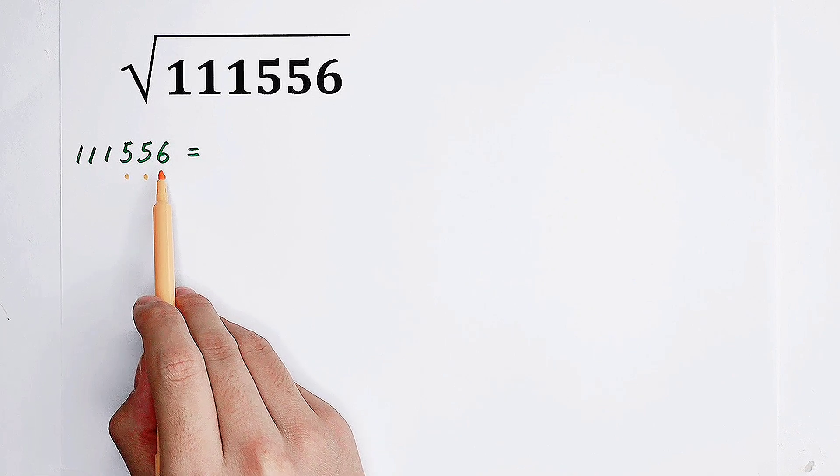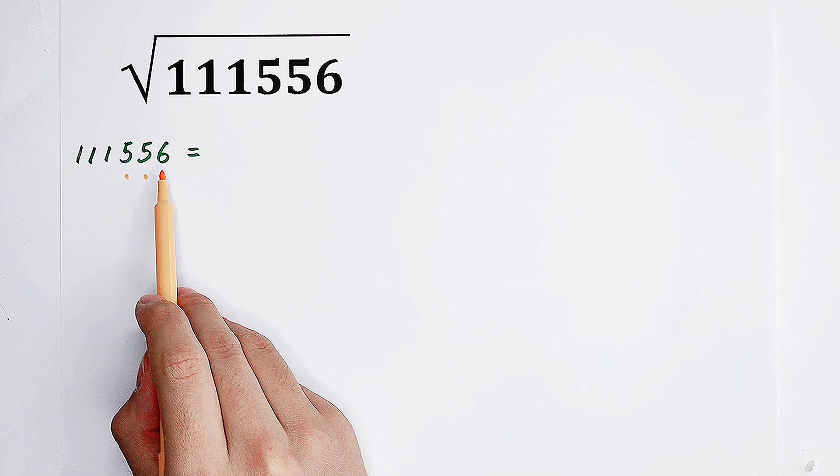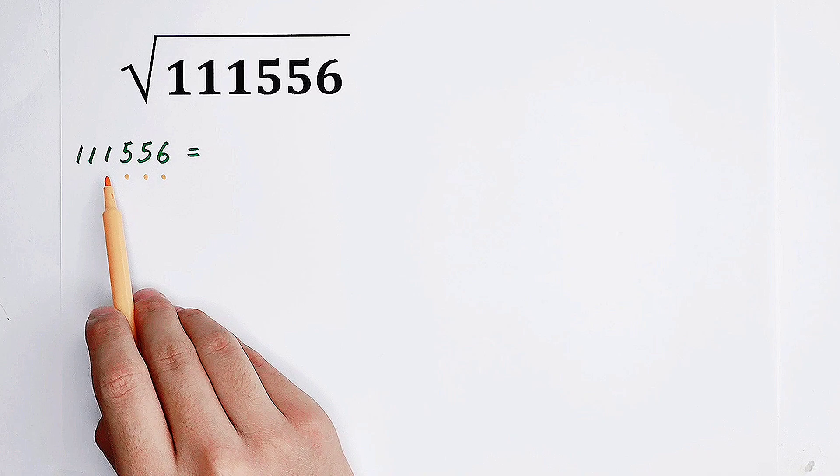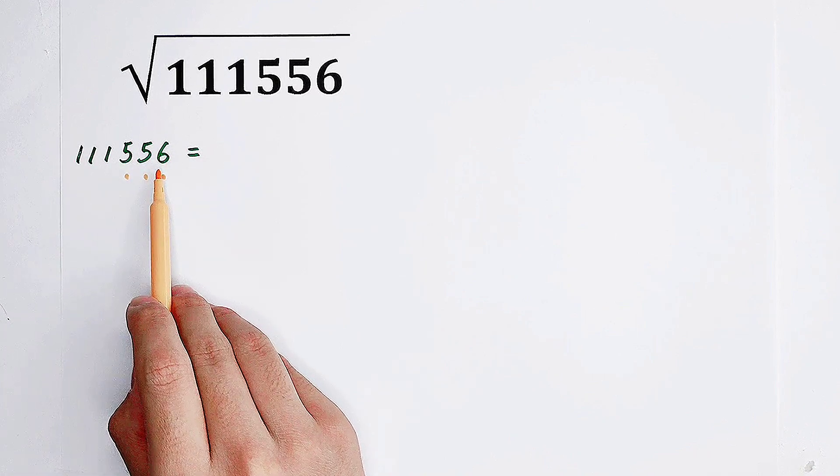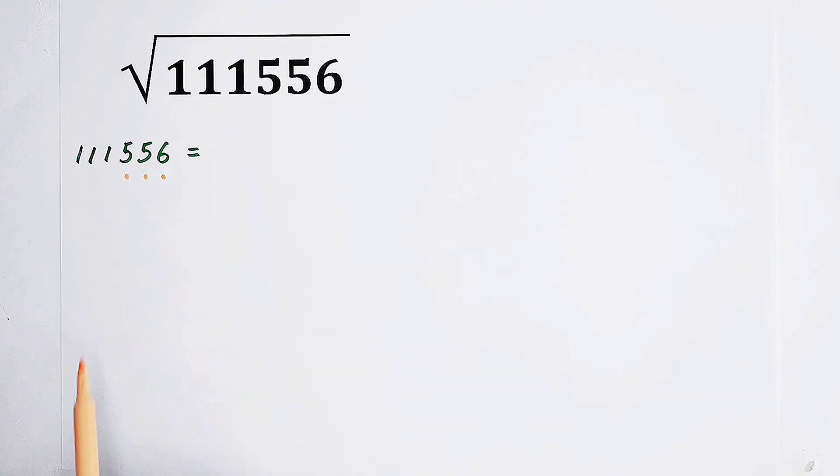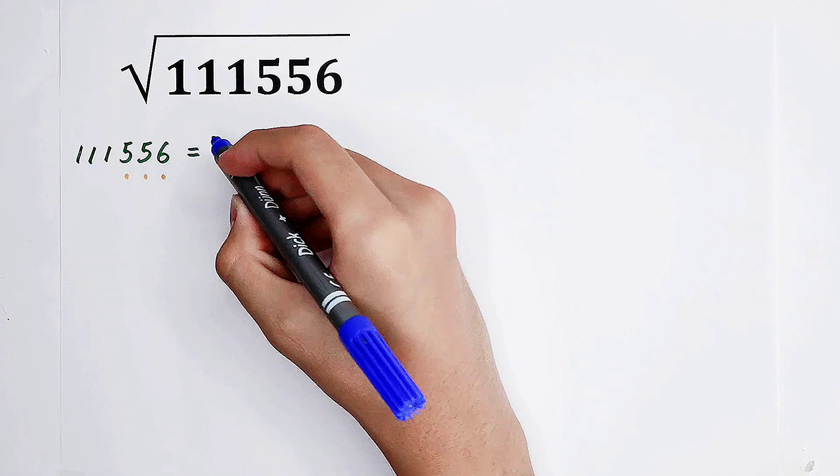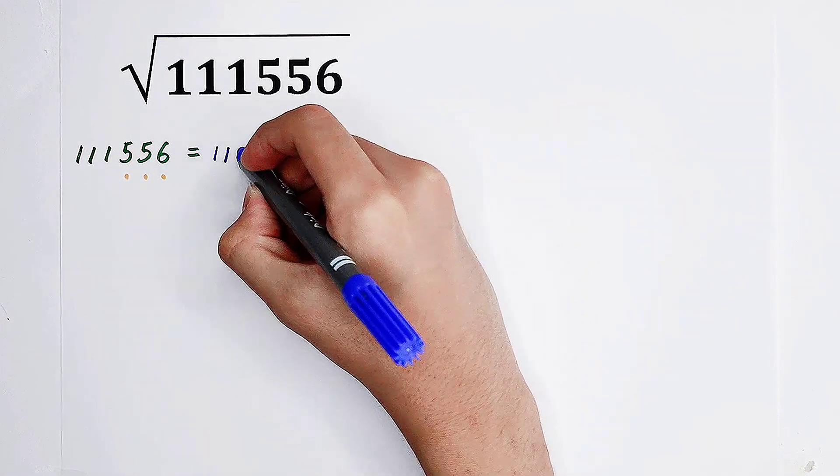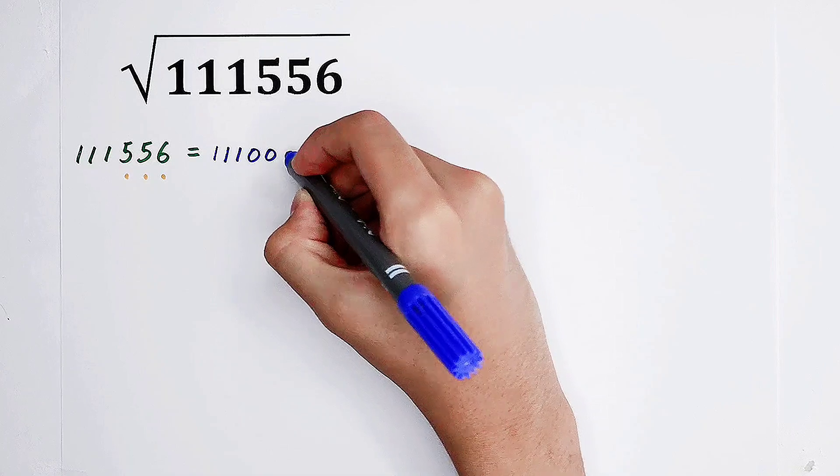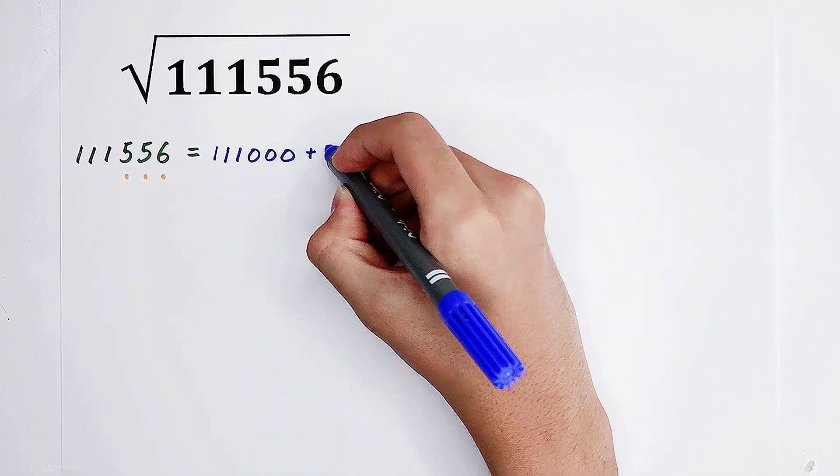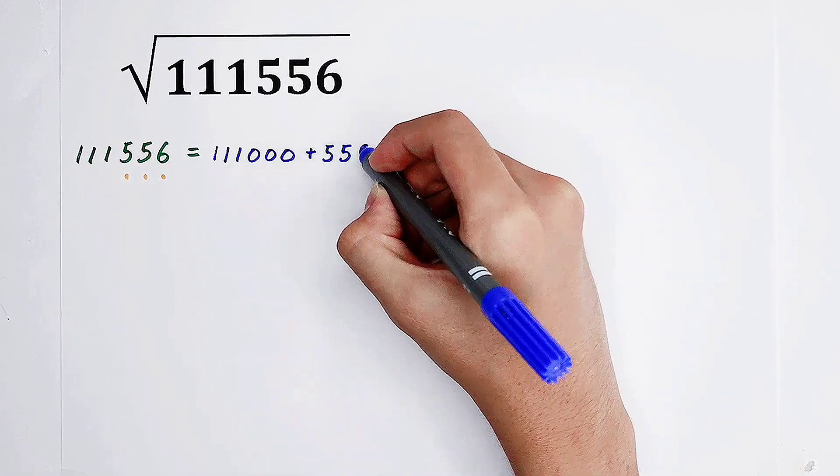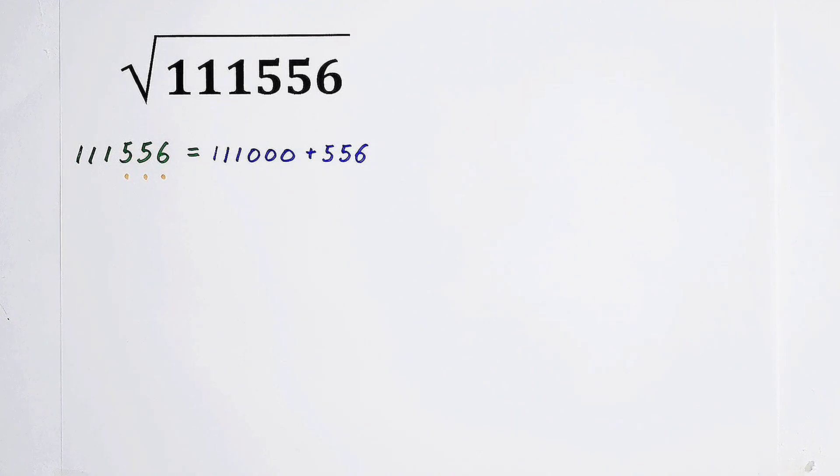Why? Since this 111 has three digits after itself. We can only write this guy as 111,000, then plus 556. Oh, yeah! It works!